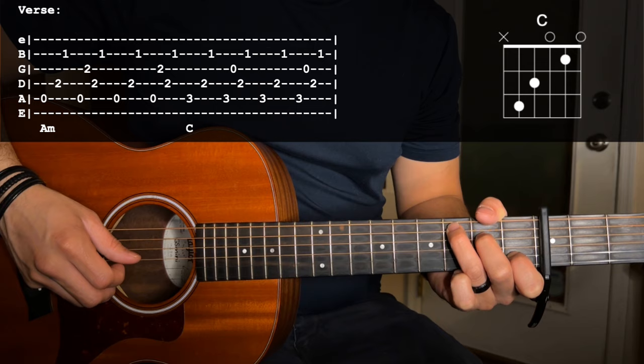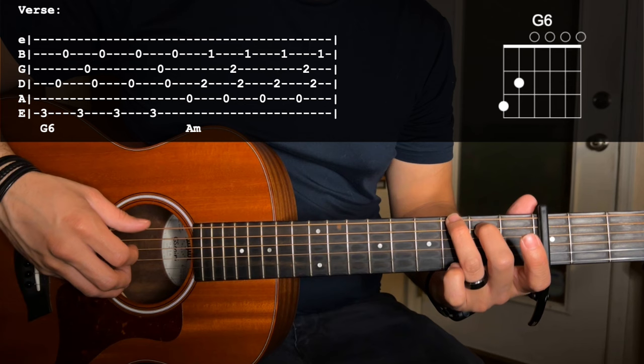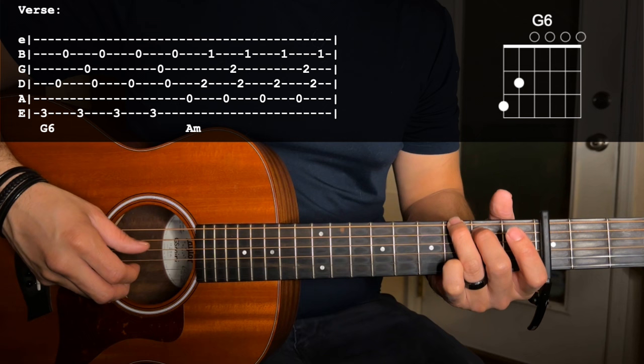Next chord is going to be that G6, so all you've got to do is move your fingers up one string each. Now we've got the third fret of the low E as a root note, and we're going to do the same picking pattern. Root, D, B, root, G, D, B.